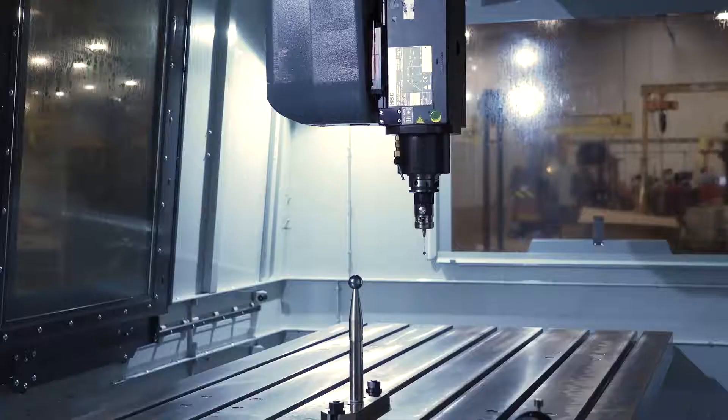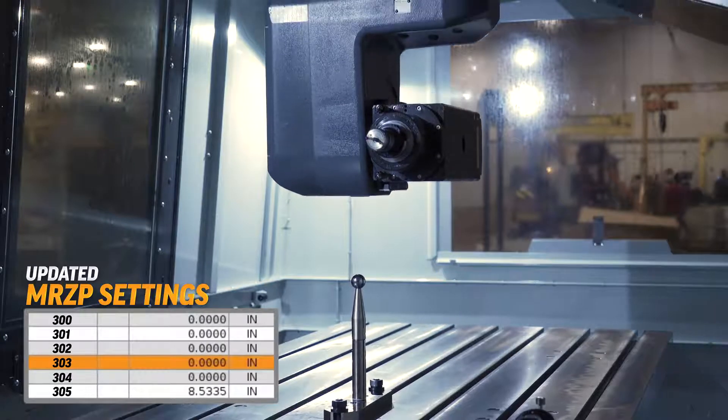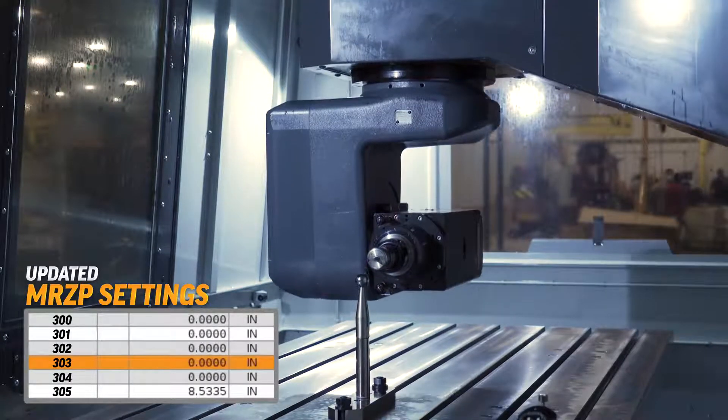That's all there is to setting the machine rotary zero points. The probing cycle will run and write the values to the proper settings when it's done.